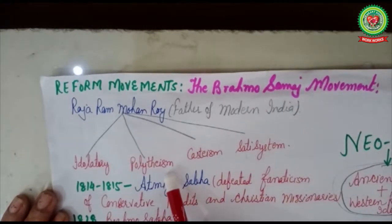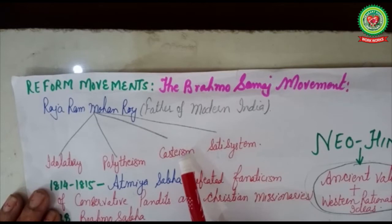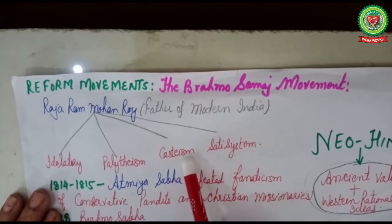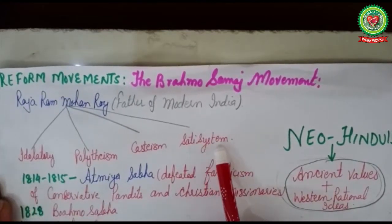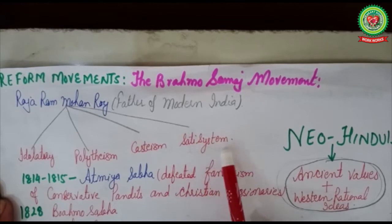He believed that there is only one God. He was against casteism and did not believe in upper or lower castes, believing all people are equally created by God and should be treated equally. He was also against the Sati system — as a child he had witnessed Sati being practiced at his own home. Sati was a system by which a woman was forced to die on the funeral pyre of her dead husband.